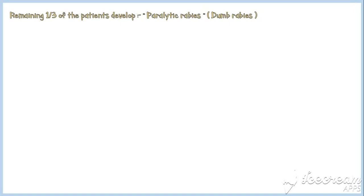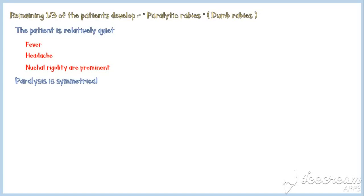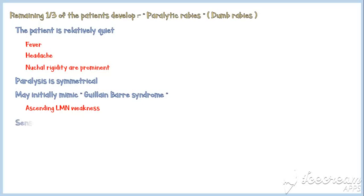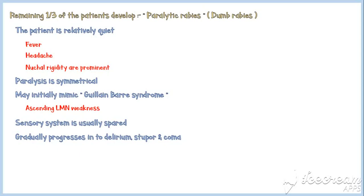The remaining one-third of patients develop paralytic rabies, also known as dumb rabies. In this type, the patient is relatively quiet compared to the furious type. Fever, headache, and nuchal rigidity are prominent. Paralysis is symmetrical. Paralytic rabies may initially mimic Guillain-Barré syndrome with ascending lower motor neuron weakness. The sensory system is usually spared, and it gradually progresses into delirium, stupor, and coma, followed by death.